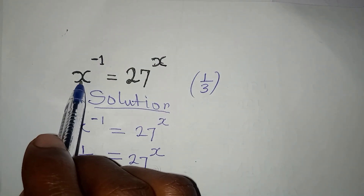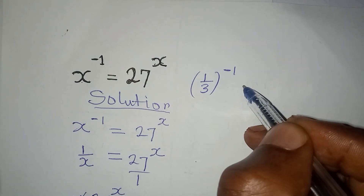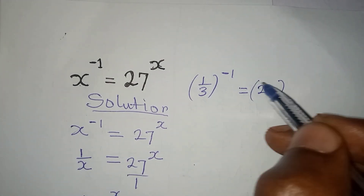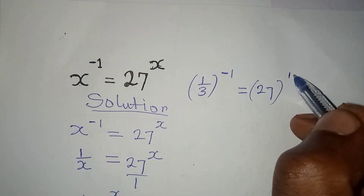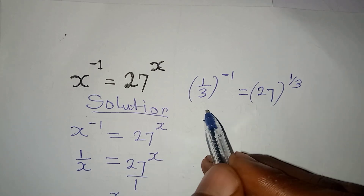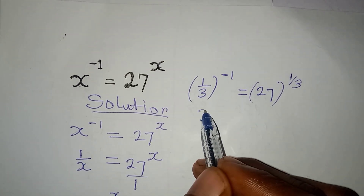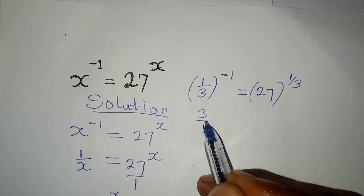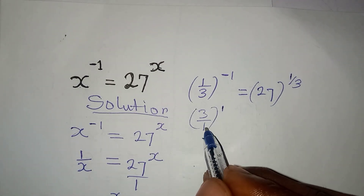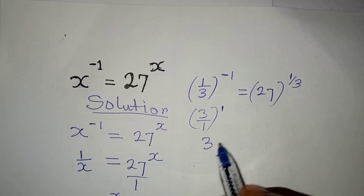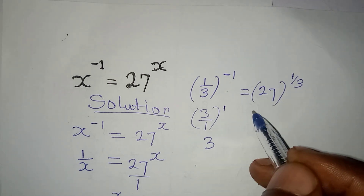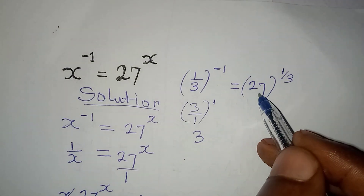Because x is 1 over 3. Now, let's verify: x to the power of negative 1 on the left-hand side gives us 1 over 3 to the power of negative 1. If you remove the negative, you flip the fraction, so it becomes 3 over 1, which is just 3, and 3 to the power of 1 is 3.